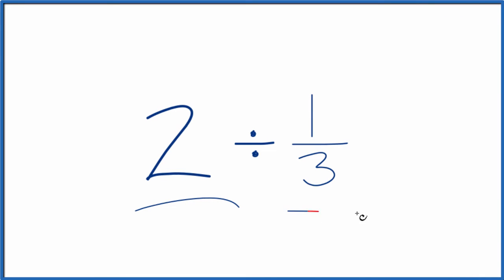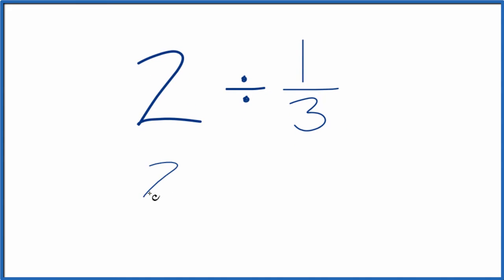Let's divide two by one-third, and here's how we'll do it. Let's call this two over one. It's still two, just now we have it as a fraction.